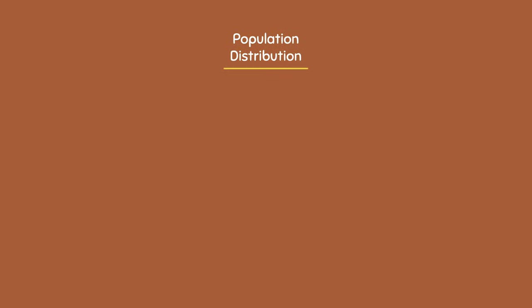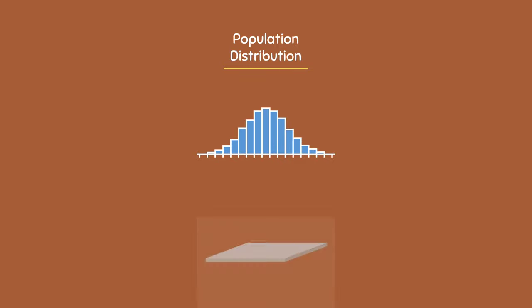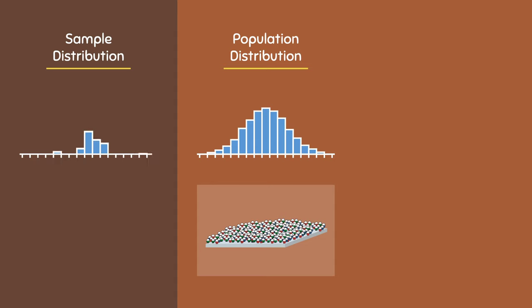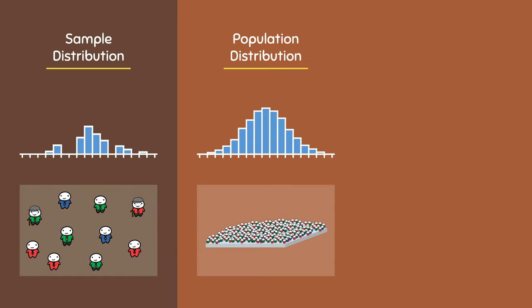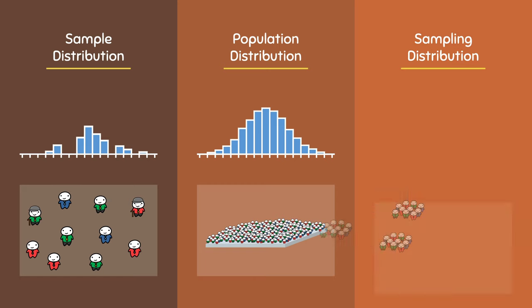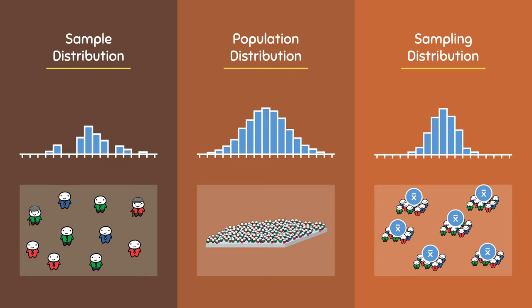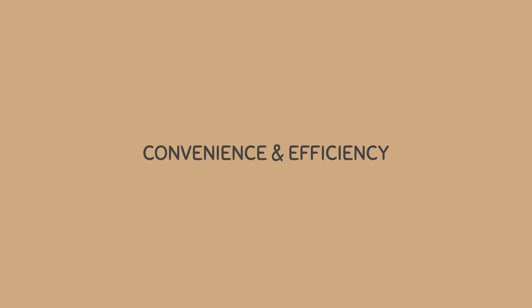So to quickly recap what we've talked about: a population distribution is a distribution that is created from measuring every single individual in the population. A sample distribution is a distribution that is created from measuring every single individual in a sample. And most importantly, a sampling distribution involves repeatedly taking a sample and calculating a statistic for each individual sample, and then combining that information to create a distribution. Now you might be asking, what's the point of a sampling distribution in the first place? And to answer that question, it all boils down to convenience and efficiency.